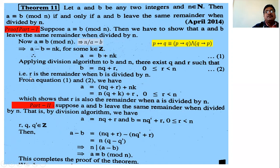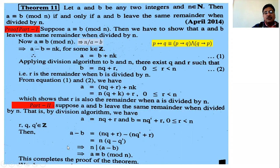Part two: assume q — suppose a and b leave the same remainder when divided by n. We must show a is congruent to b modulo n. The assumption means a equals nq plus r and b equals nq' plus r for the same remainder r, since a and b leave the same remainder when divided by n.